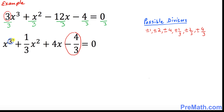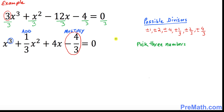We are going to pick three numbers among these possible divisors. If you add them, they must add up to 1 over 3, and if you multiply them they must equal negative 4 over 3. It would be really hard to just pick any three numbers from here, so let me show you a super easy way of doing this.